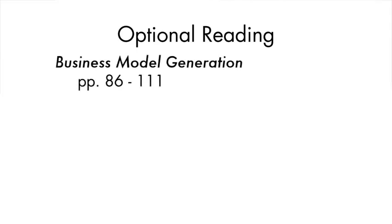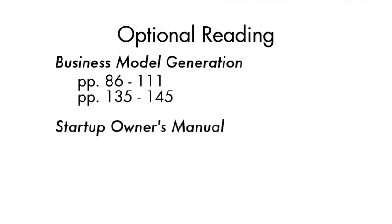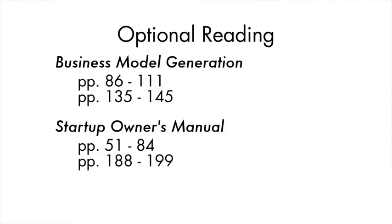Now that we have an overview of the business model canvas and customer development, there's some optional reading for the next lecture. Take a look at Business Model Generation pages 86 through 111 and pages 135 to 145. In The Startup Owner's Manual, take a look at pages 51 to 84 about market size, and then pages 188 to 199 and pages 457 to 459. Also take a look at the links below for four additional readings that don't require any of the textbooks.